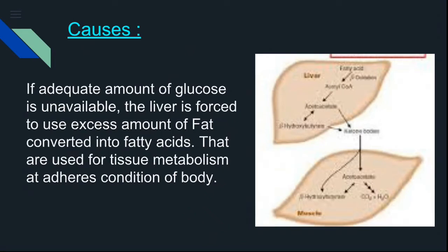If an adequate amount of glucose is unavailable in the body, the liver is forced to use excess fat, which is converted into fatty acids. These fatty acids are used for tissue metabolism under adverse conditions. In the liver, fatty acids are converted into acetyl-CoA, then acetyl-CoA into acetoacetic acid, which is then converted into beta-hydroxybutyric acid or acetone.